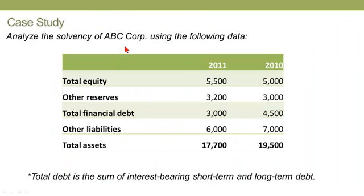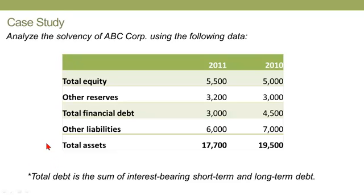So if we take a hypothetical ABC Corp and pull out some aggregated major line items — summary account balances — at year-end 2010 and year-end 2011. Keep in mind these are year-end point-in-time account balances: equity, reserves, total financial debt liabilities, the sum of those being total assets. In the CFA, what's important is that total debt is the sum of interest-bearing short-term and long-term debt.